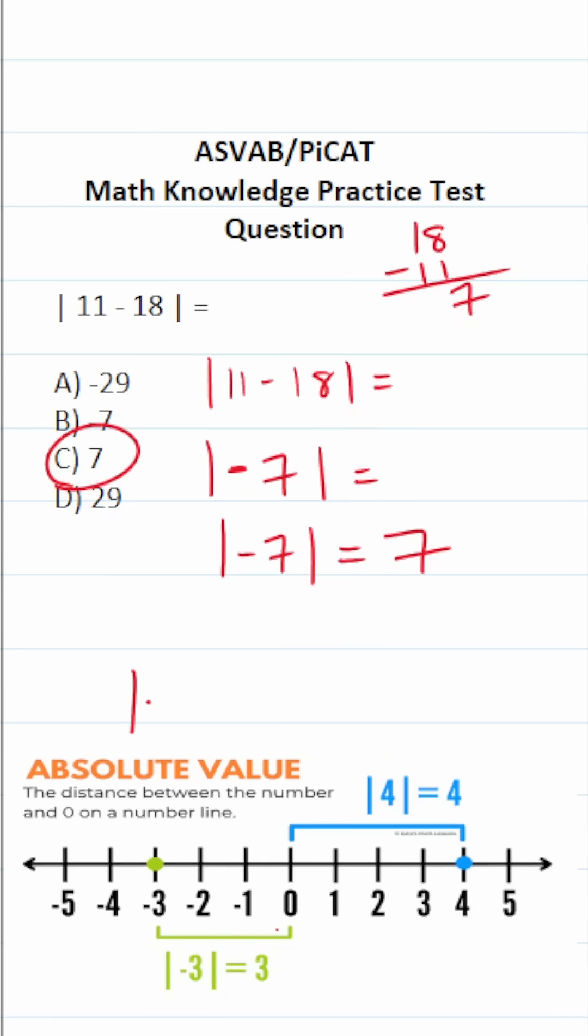So for example, the absolute value of negative 3 is 3. Because if we go to negative 3 on the number line, we can see that it is 1, 2, 3 places away from 0. So make sure you understand this concept because you don't want to miss an easy question like this.